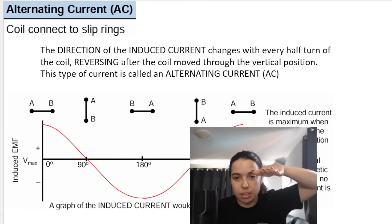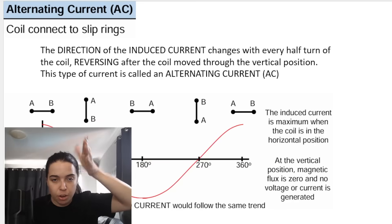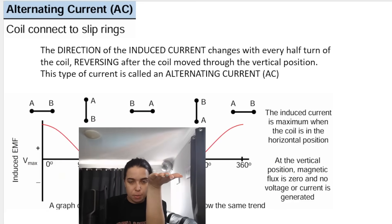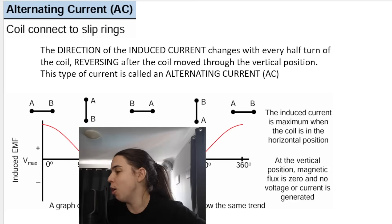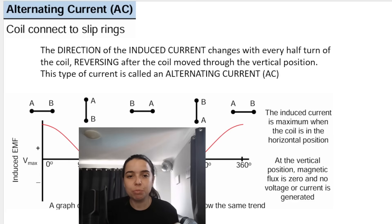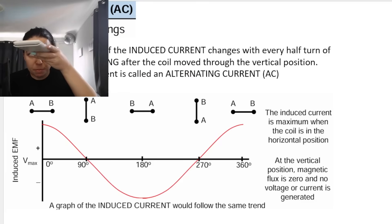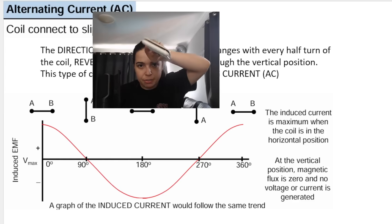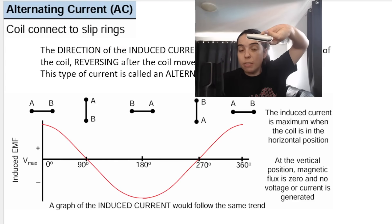On the diagram, AB represents the coil being flat, and AB in the other orientation represents the coil standing vertically — then it rotates to being flat, and then rotates to standing vertically again. Using a calculator to demonstrate: here it would be flat, then it rotates to vertical, then back to flat, then back to vertical, and then back to flat. That's one full rotation.